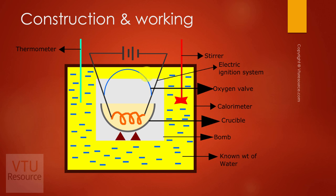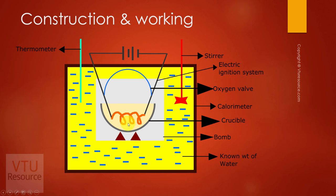Let us discuss the working. Before ignition of the fuel, the initial temperature of water is taken using the thermometer. The fuel present in the platinum or ceramic crucible is ignited using the electric ignition system. The fuel is burnt and energy in the form of heat is liberated. The liberated heat is absorbed by the surrounding water, causing its temperature to rise. The final temperature is noted using the thermometer. By knowing the weight of fuel, weight of water, and the rise in temperature, we can determine the calorific value.